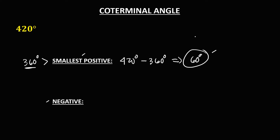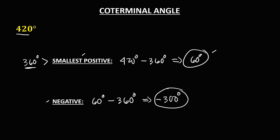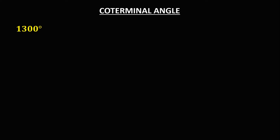To find the negative coterminal angle, from the smallest positive which is 60 degrees, we subtract 360 degrees. So the negative coterminal angle for 420 degrees is negative 300 degrees.